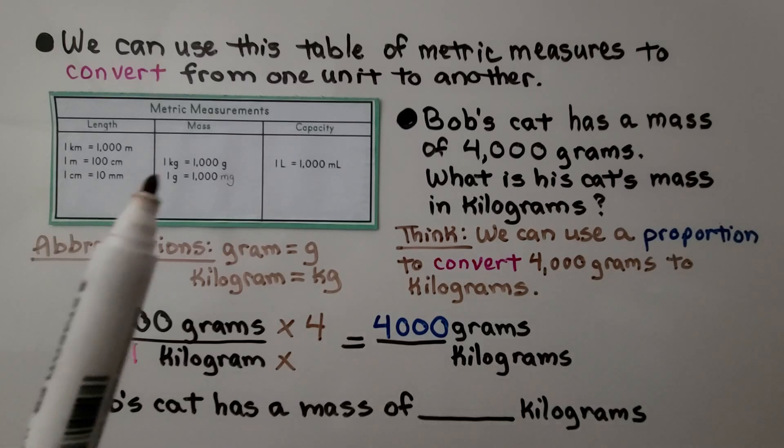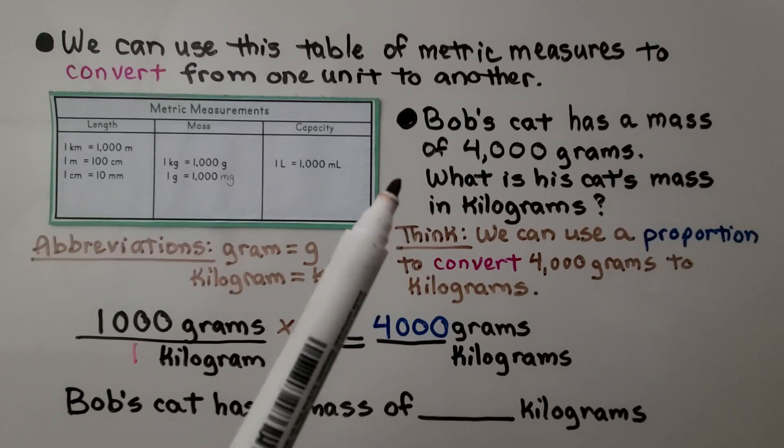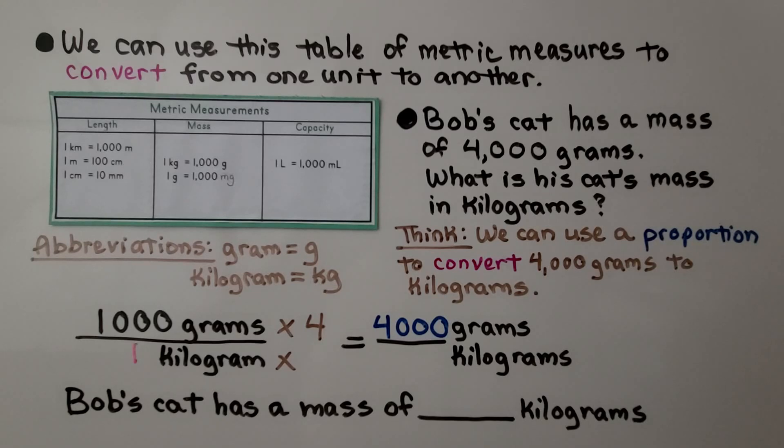We can use this table of metric measures to convert from one unit to another. Bob's cat has a mass of 4,000 grams. What is this cat's mass in kilograms? We can use a proportion to convert 4,000 grams to kilograms. G is the abbreviation for gram and kg is the abbreviation for kilogram.